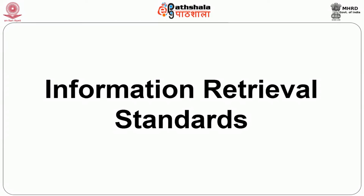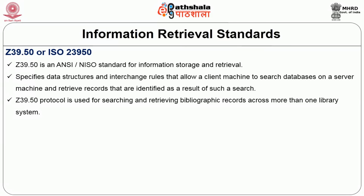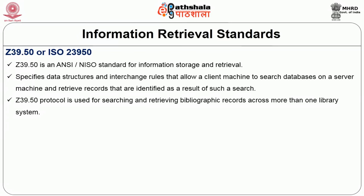For information retrieval, there is a standard called Z39.50 — also known as ISO 23950 — an ANSI/NISO standard for information storage and retrieval. Z39.50 is the information retrieval protocol used for searching and retrieving bibliographic records across more than one library system. It requires a client program on one end and a server program on the other — a Z39.50 server and client interact for exchange of bibliographic records. This is widely used as a standard.